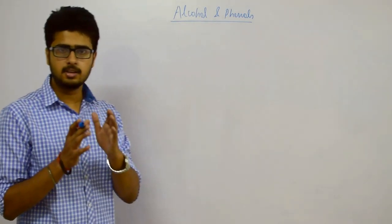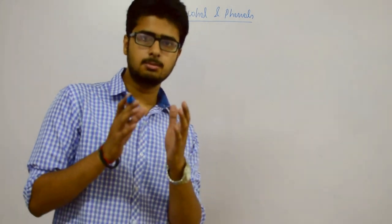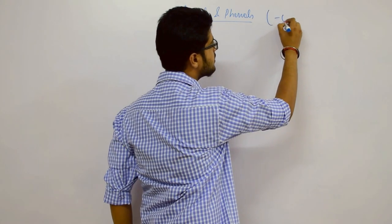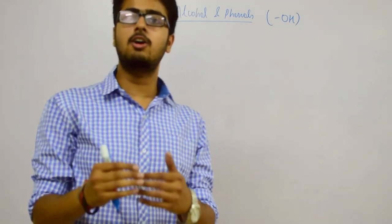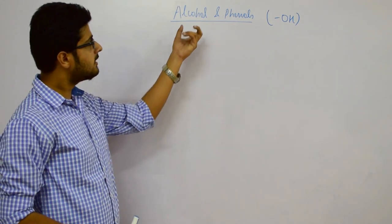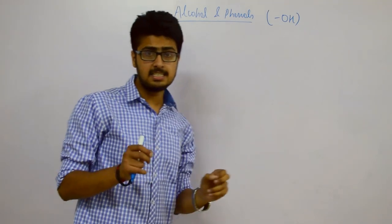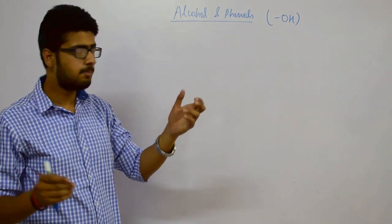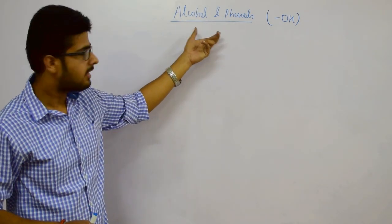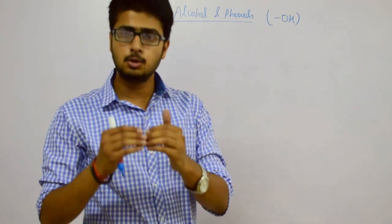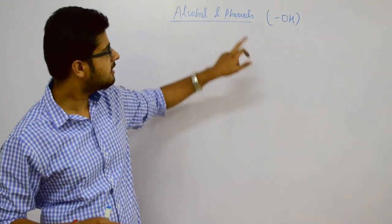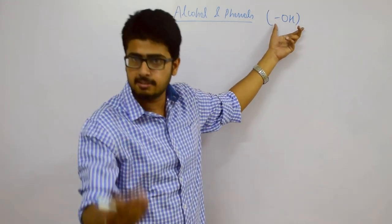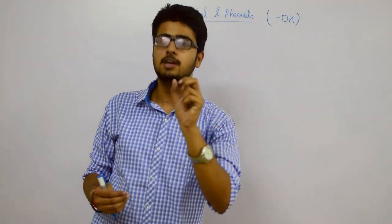We have the topic of alcohol and phenol. Both alcohol and phenol belong to the functional group OH, meaning a functional group OH is attached in both cases. The basic difference is: when the OH group is attached to an aliphatic carbon chain, it is always alcohol; if the OH group is attached to a benzene ring, that is an aromatic chain, then it is called phenol. In both cases, they are hydroxy derivatives with OH as their functional group.